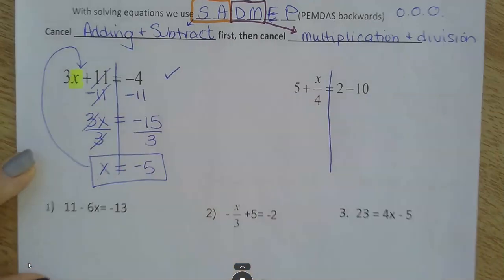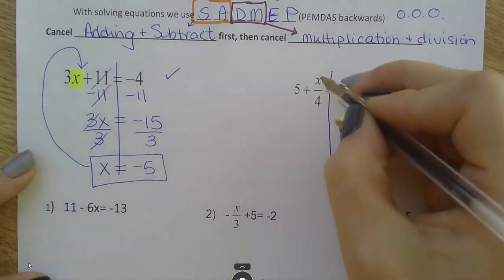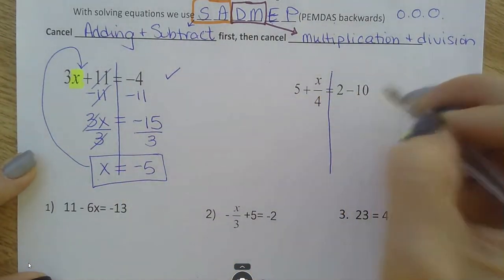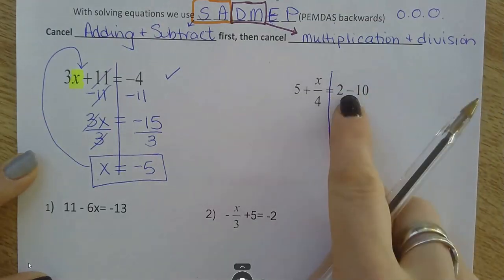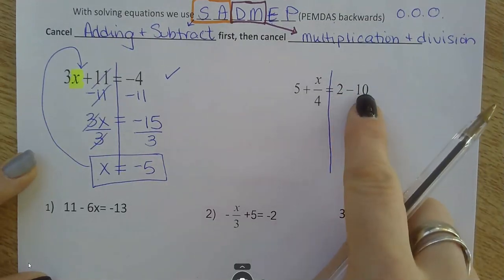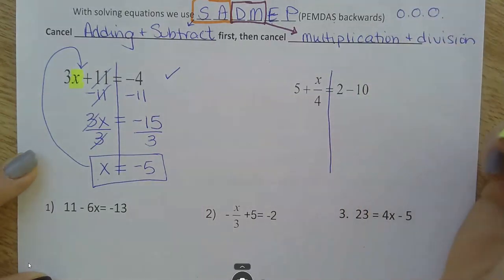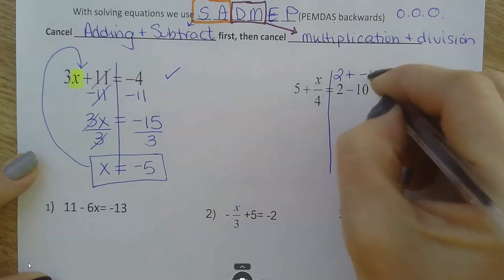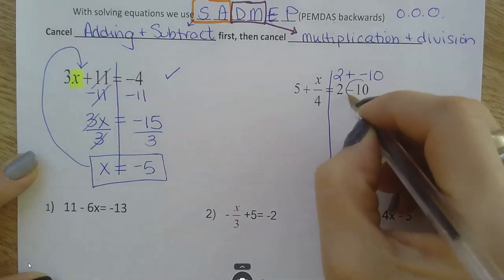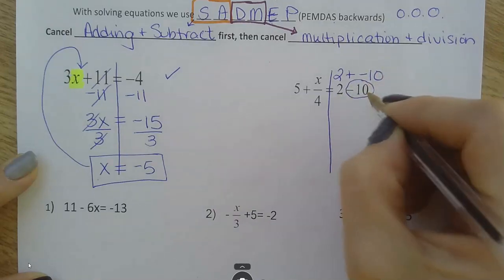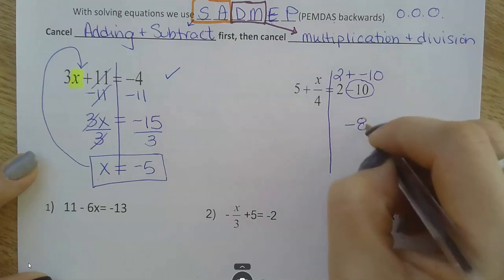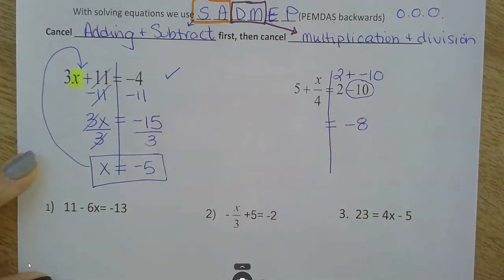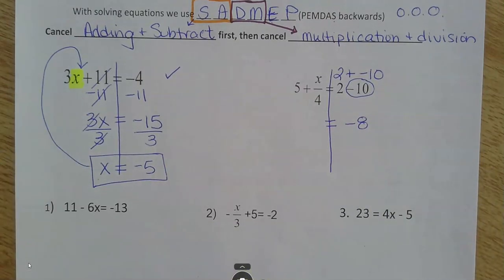All right, let's do another one. 5 plus x over 4 equals 2 minus 10. Well, on this side, I can just simplify this. What is 2 minus 10? I can also, if you remember your rules from chapter 1, this is 2 plus negative 10. Right? If I think of this as negative 10, 2 and negative 10 makes negative 8. So, I'm just going to rewrite it so it's a little bit simplified. I got negative 8 there. And, 5 plus x over 4.